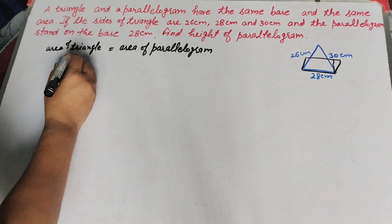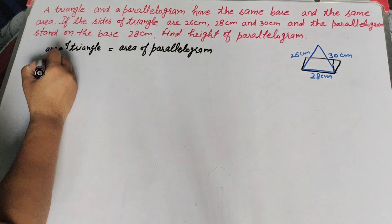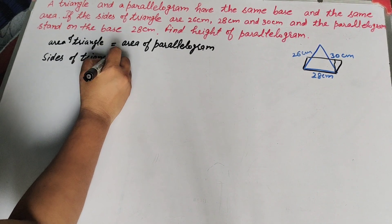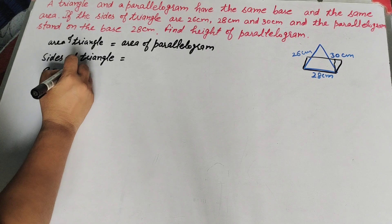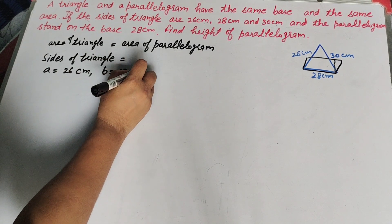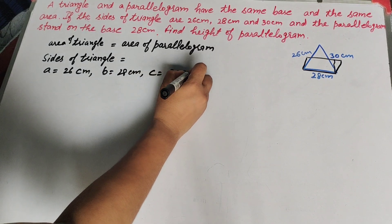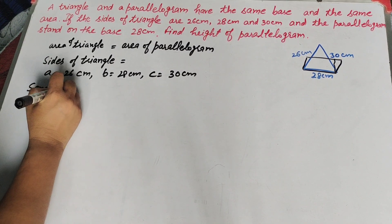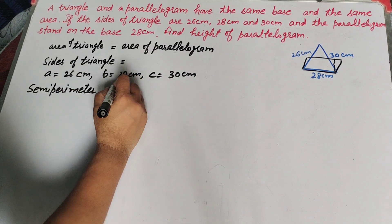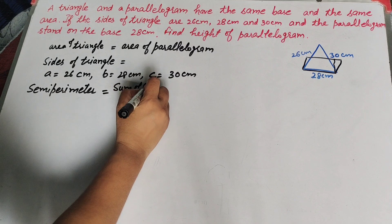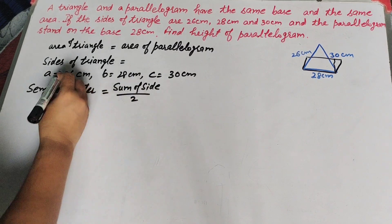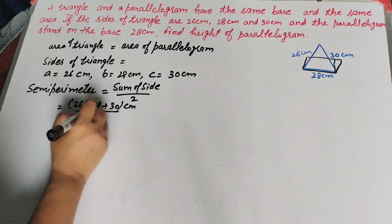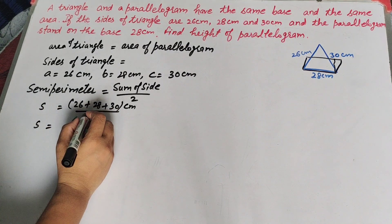Since area of triangle equals area of parallelogram, we first find the area of the triangle. The sides are given as a = 26 cm, b = 28 cm, and c = 30 cm. We find the area using Heron's formula, so we need the semi-perimeter: s = (sum of sides) / 2 = (26 + 28 + 30) / 2.